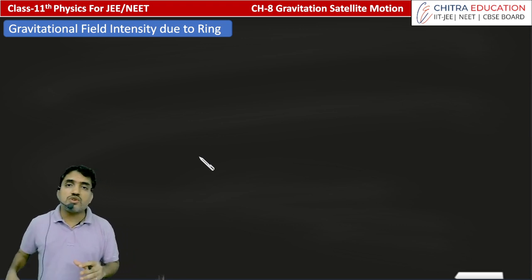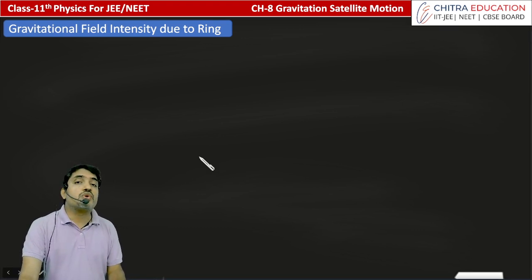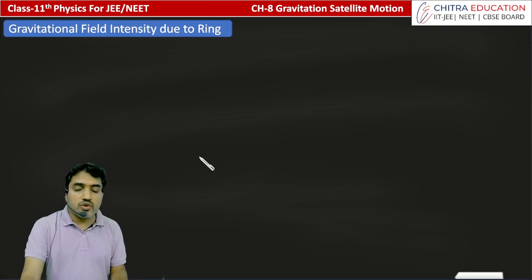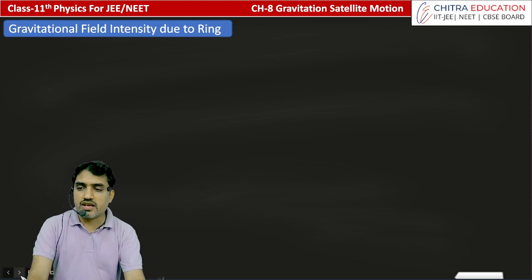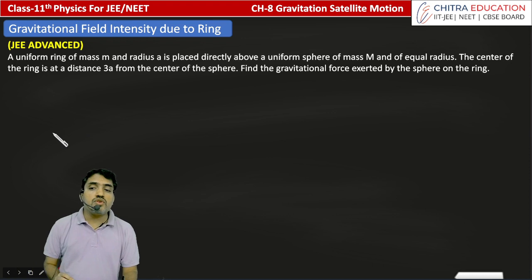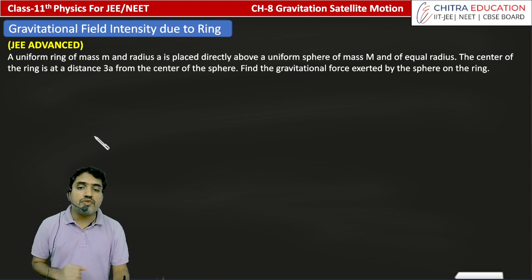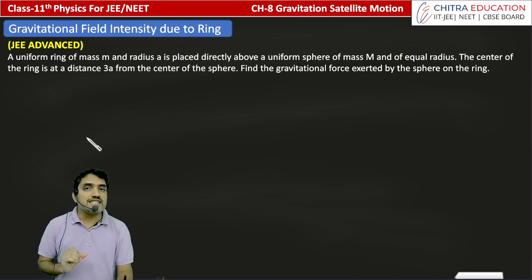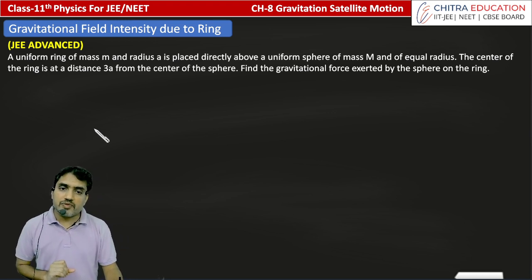Today we are going to solve a numerical problem. We have seen in the last lecture the gravitational field due to a circular ring. The question is: a uniform ring of mass m and radius A is placed directly above a uniform sphere of mass capital M and radius equal to the radius of the ring.